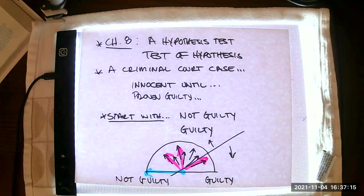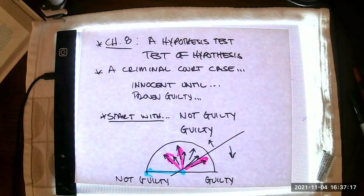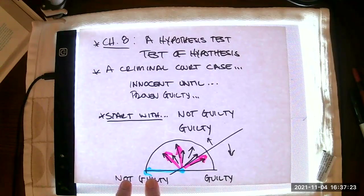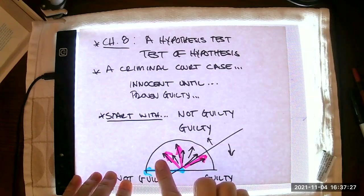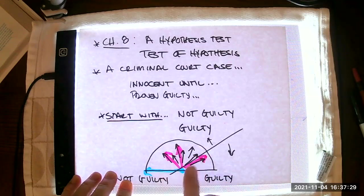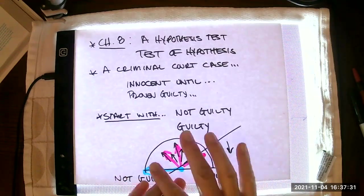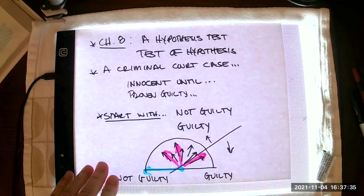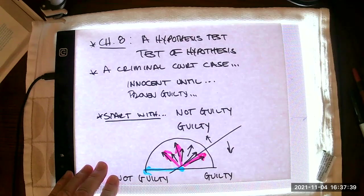As evidence is introduced by the prosecution, the probability that a person is guilty increases. But then the defense has its say and it might decrease or even increase even more. The point is that as evidence accrues, there comes a point on this scale where the jury will decide between not guilty and guilty. A test of hypothesis is very much like this. We start with something similar to the not guilty verdict.